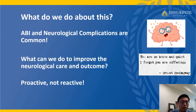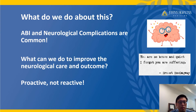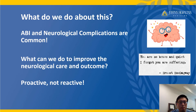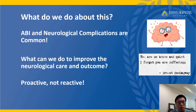ABI and neurologic complications are common — so what do we do about this? What can we do to improve neurologic care and outcome? We should care because mortality increases with ABIs. It doubles or triples mortality when ECMO patients have ABIs. The current practice is really reactive, not proactive. We'll talk about how to manage these patients and what the modifiable risk factors are.